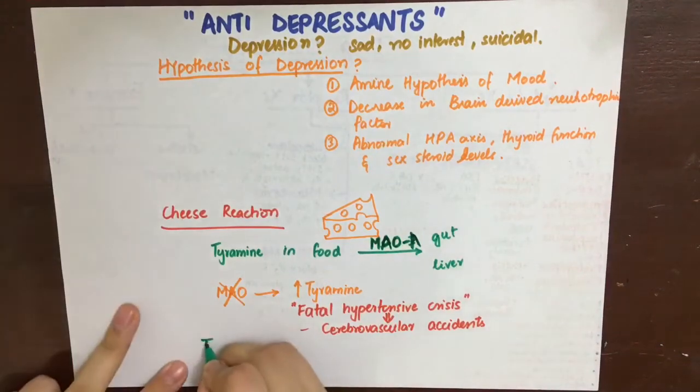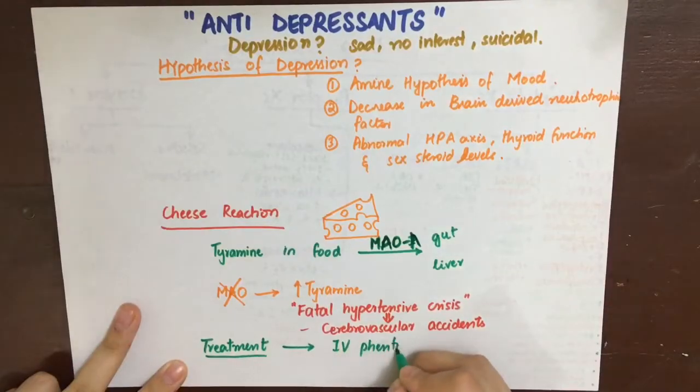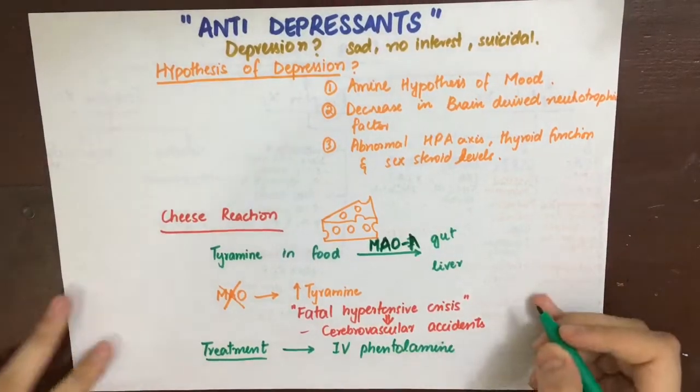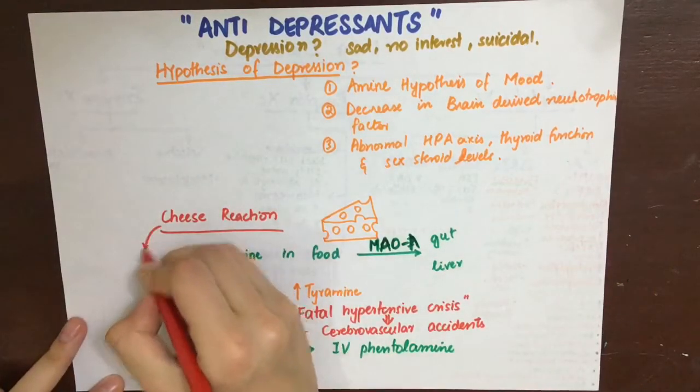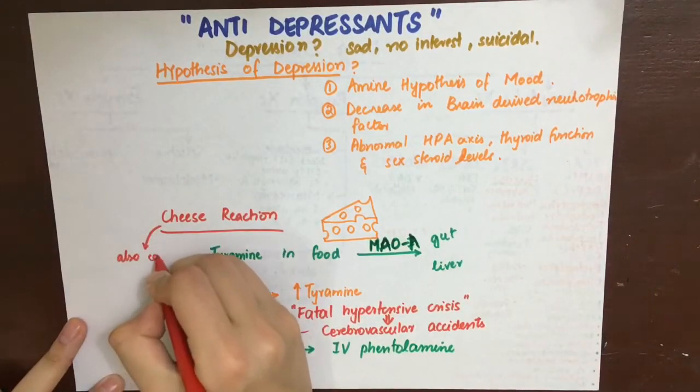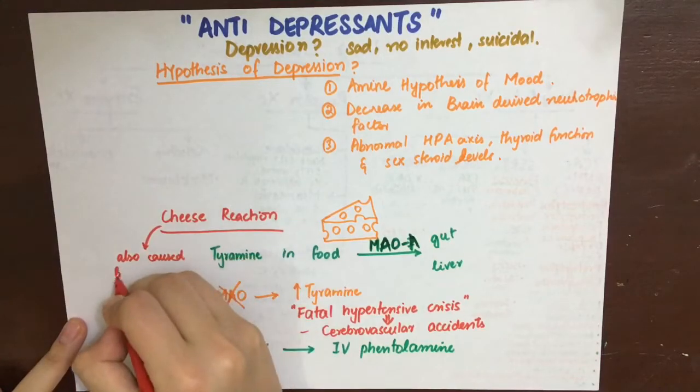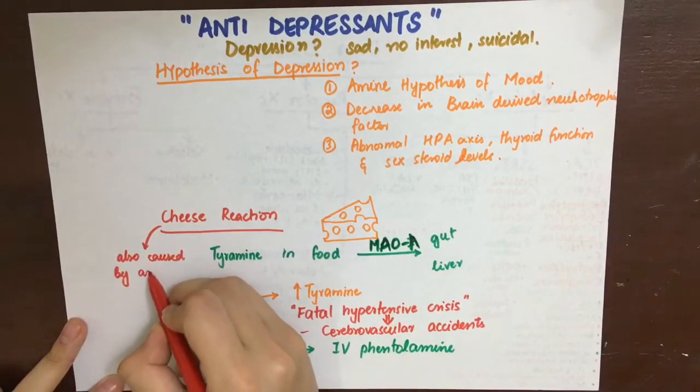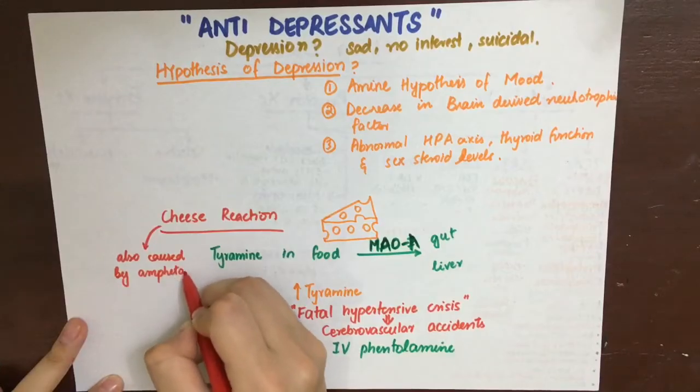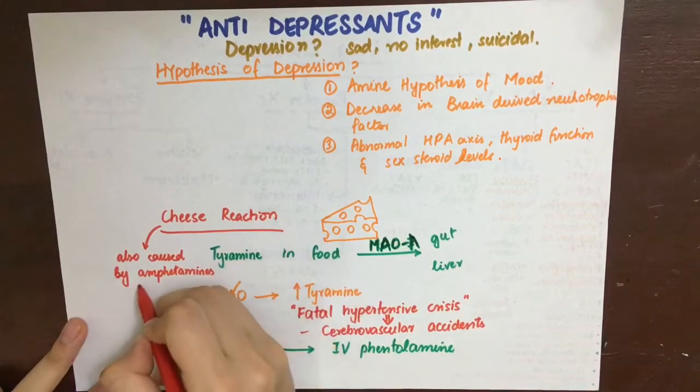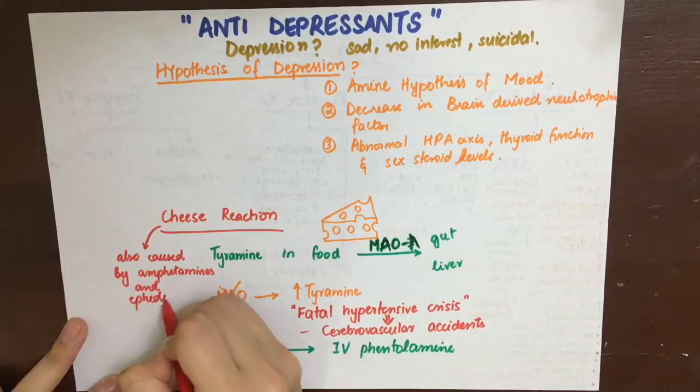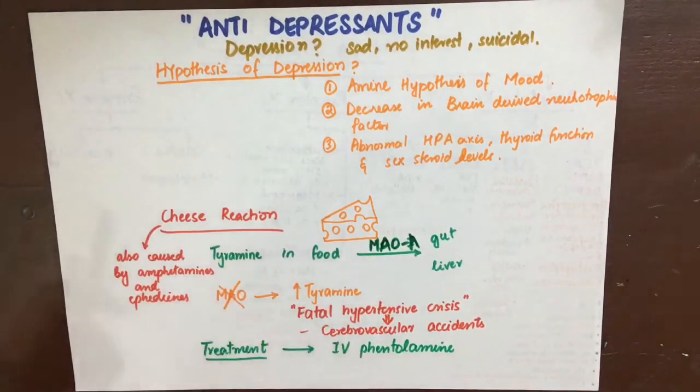This cheese reaction or hypertensive crisis that is associated with high blood pressure can be treated with IV phentolamine. Now phentolamine we know is an alpha-blocker, so it will dilate the vessels and result in hypotension. This cheese reaction can also occur with MAO inhibitors and amphetamines which are CNS stimulants and act by increasing norepinephrine and dopamine in the brain, and also with ephedrines which are sympathomimetics and also indirectly increase norepinephrine release.